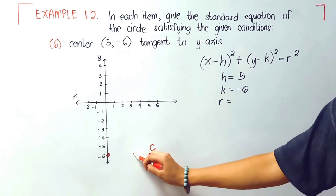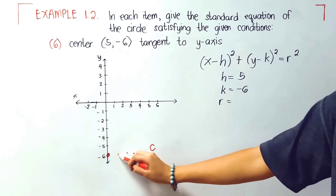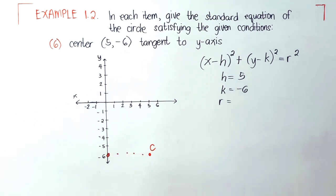We'll just count the number of units from the center to that point of the circle. So we have 1, 2, 3, 4, and 5. Therefore, our radius here is 5.